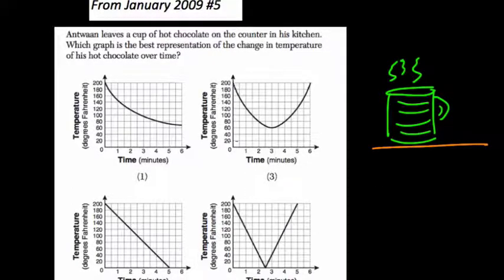Here in the third one, what's happening? Well, time is on the x-axis and temperature is on the y. So your hot chocolate starts out hot, and then over time it decreases. And after about three minutes, it's at its lowest temperature, and then it starts to rise again.